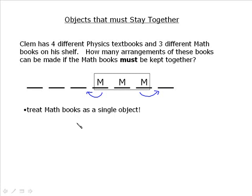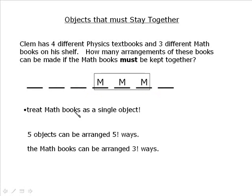Now that changes things a bit because even though it can move all over the place, instead of having one, two, three, four, five, six, seven objects, if you count them up now, we've only got five objects. One, two, three, four, five objects. The four physics books and then the one math object. And five objects can be arranged five factorial ways, or five pick five if you preferred.